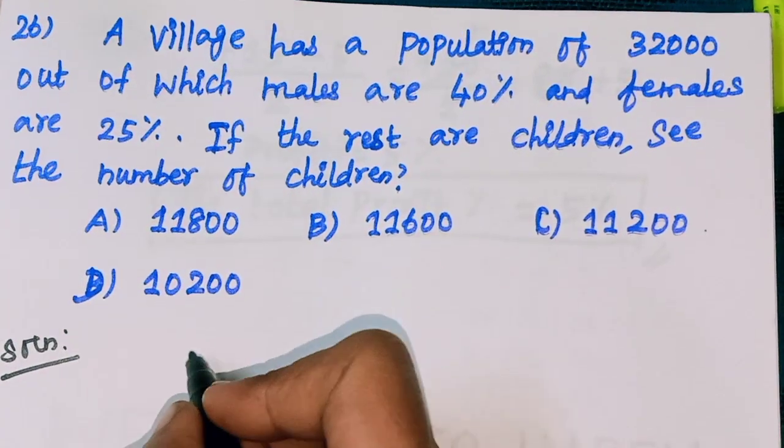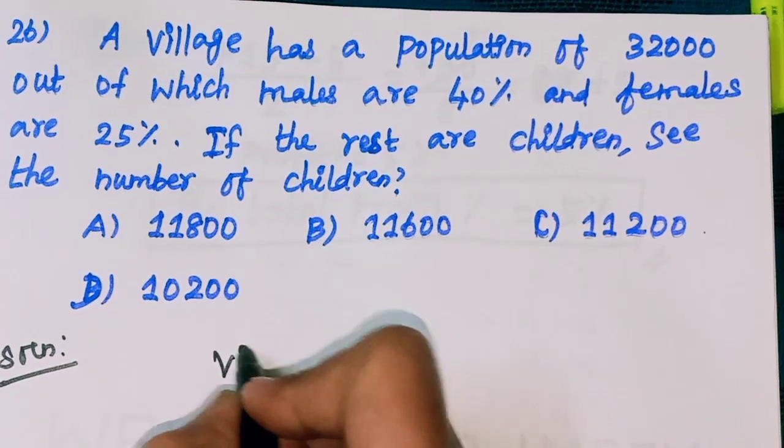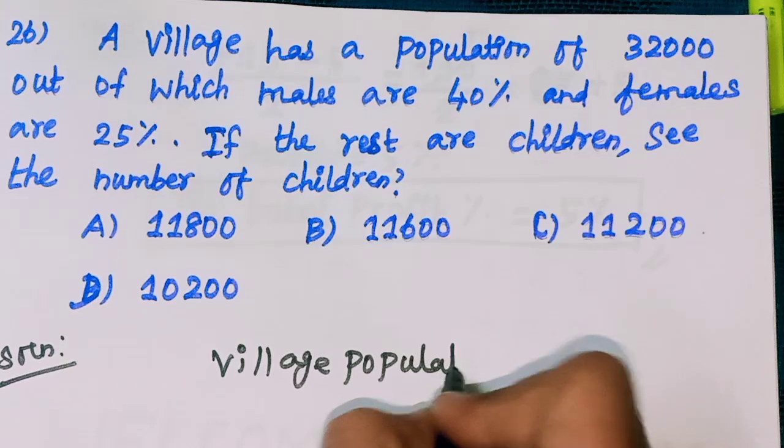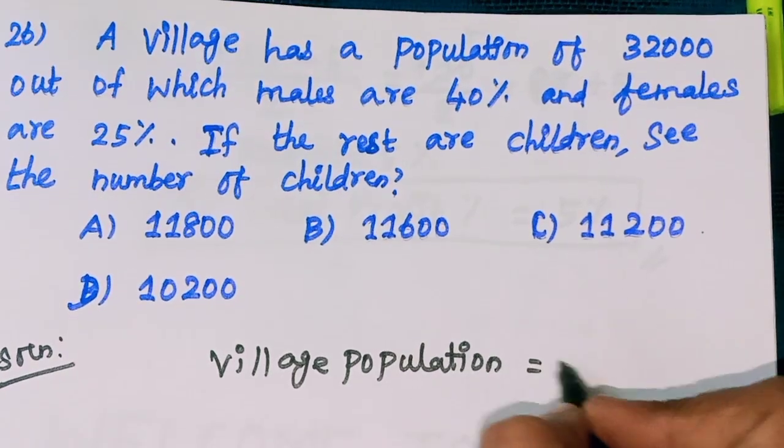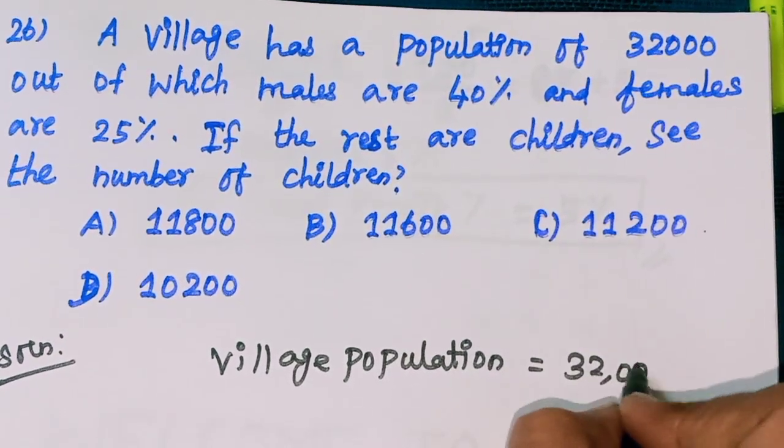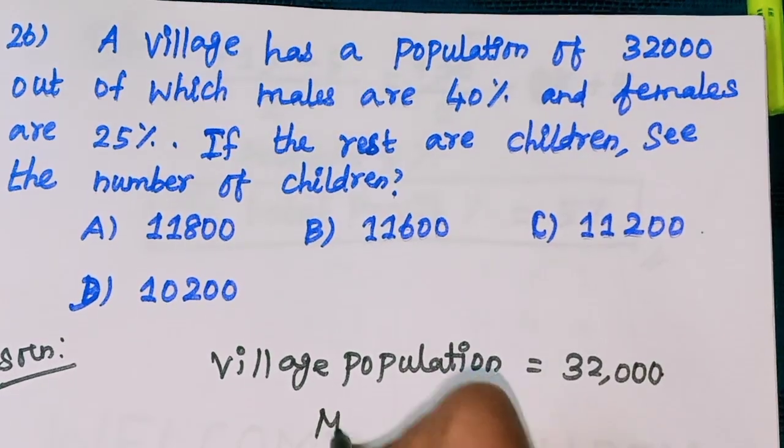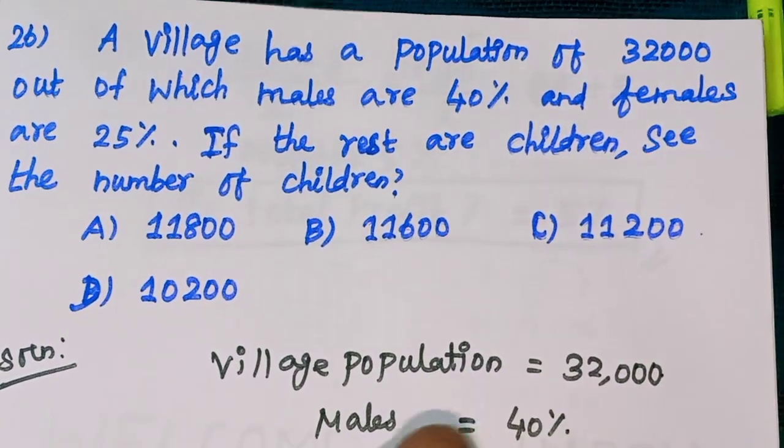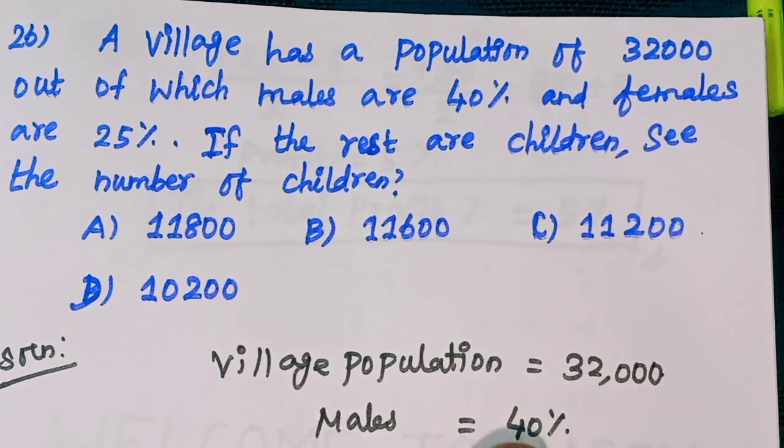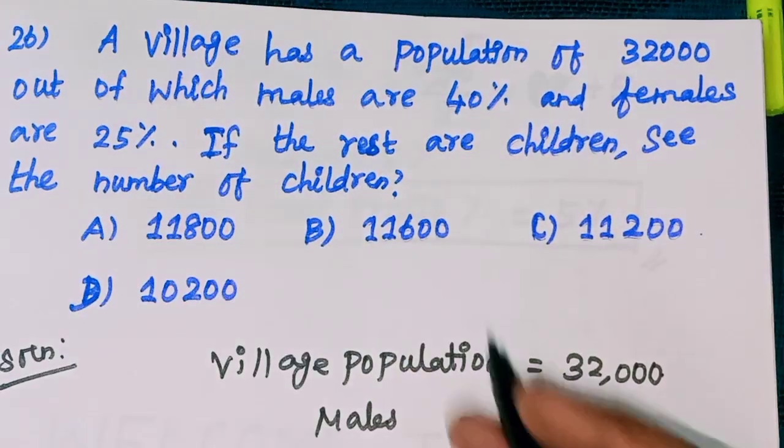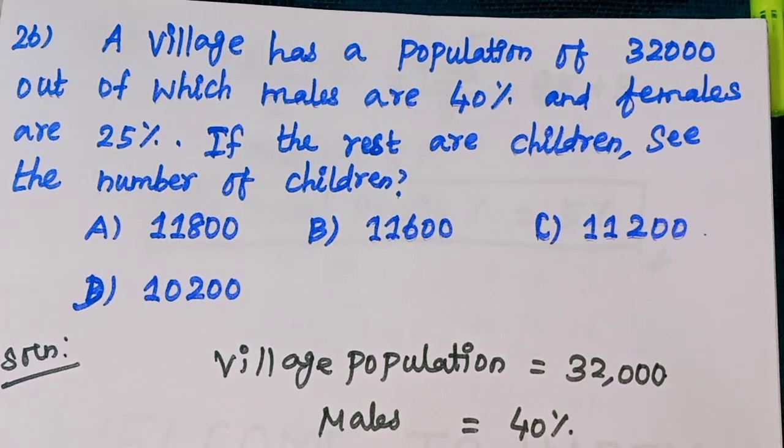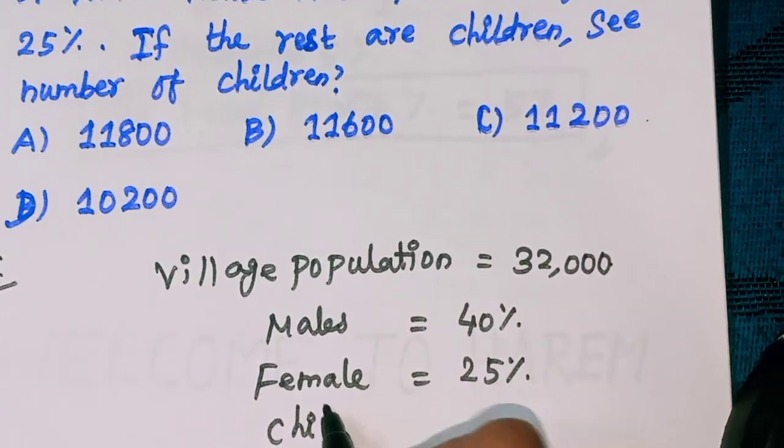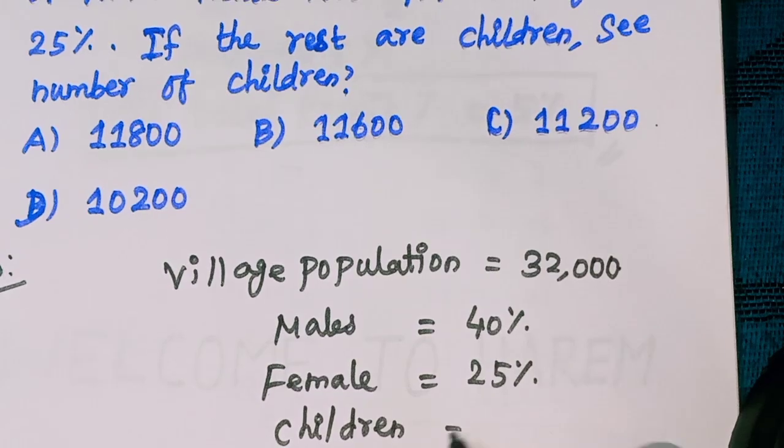So village population equals 32,000. Males are 40%, males equal to 40%, and females equal to 25%. Children equal to question mark.